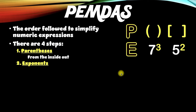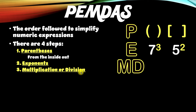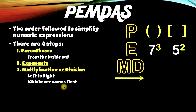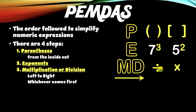Here's where it starts to get tricky. Step number three is actually two letters together — MD — which stands for multiplication or division. I also like to put an arrow here because step three is done from left to right, whichever comes first. If you see multiplication first, then you do multiplication first. If you see division first from left to right, then you do division first.